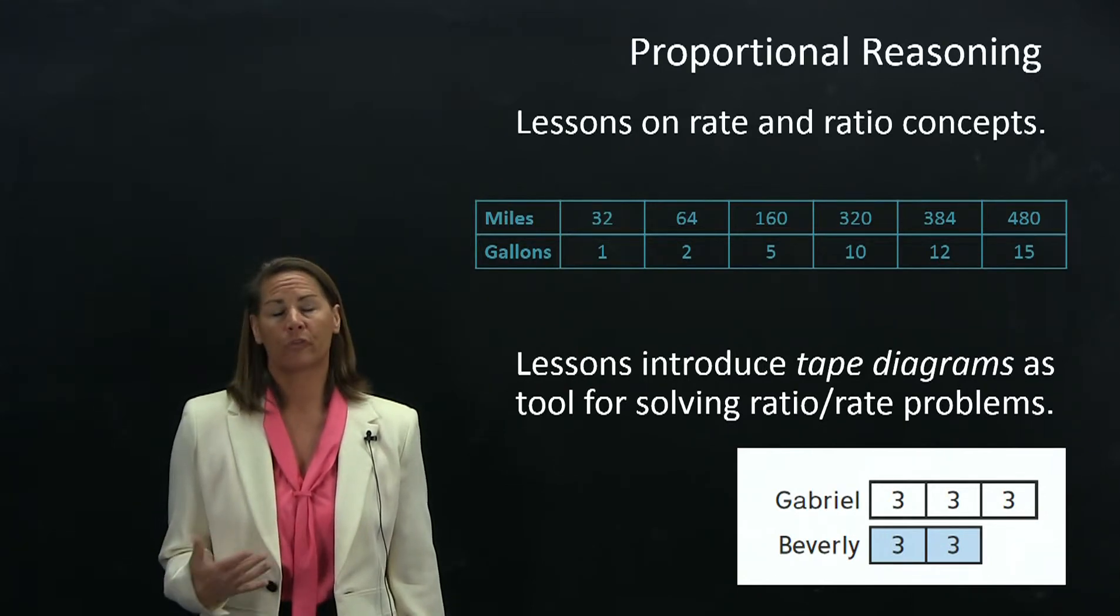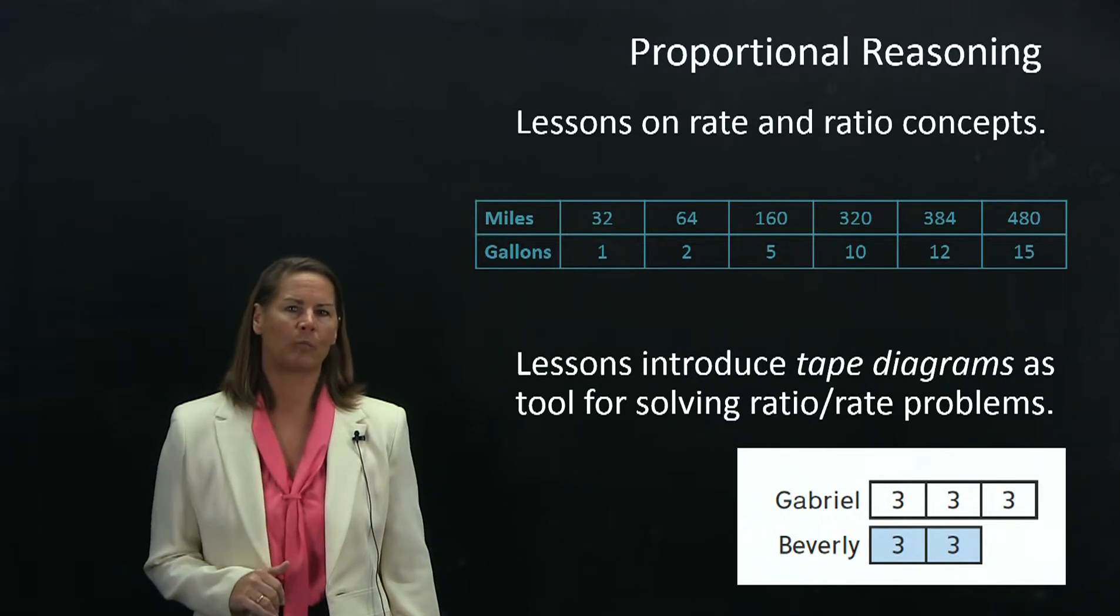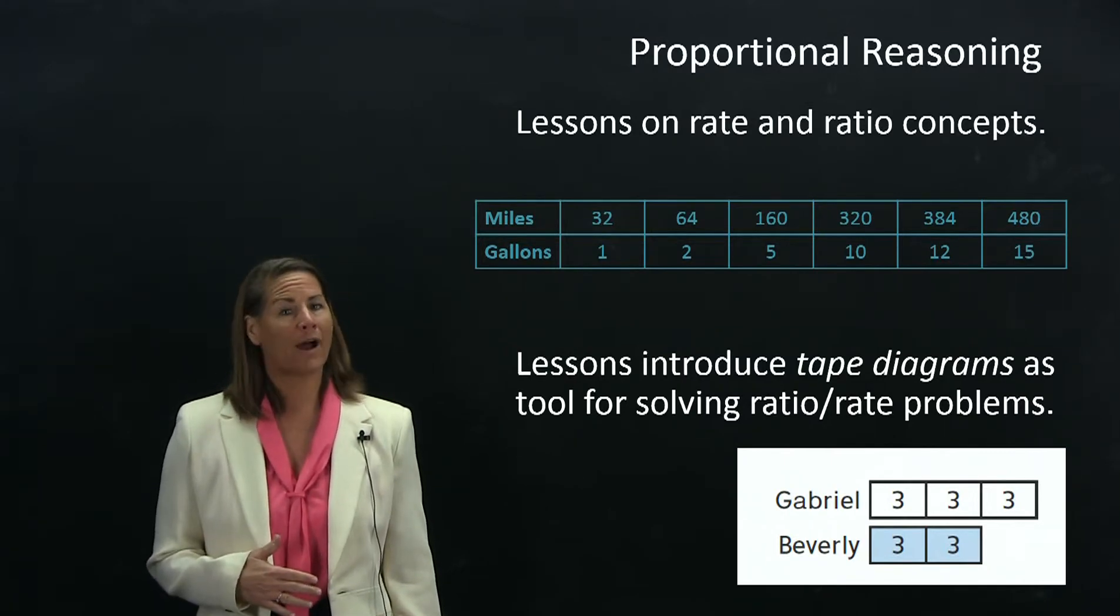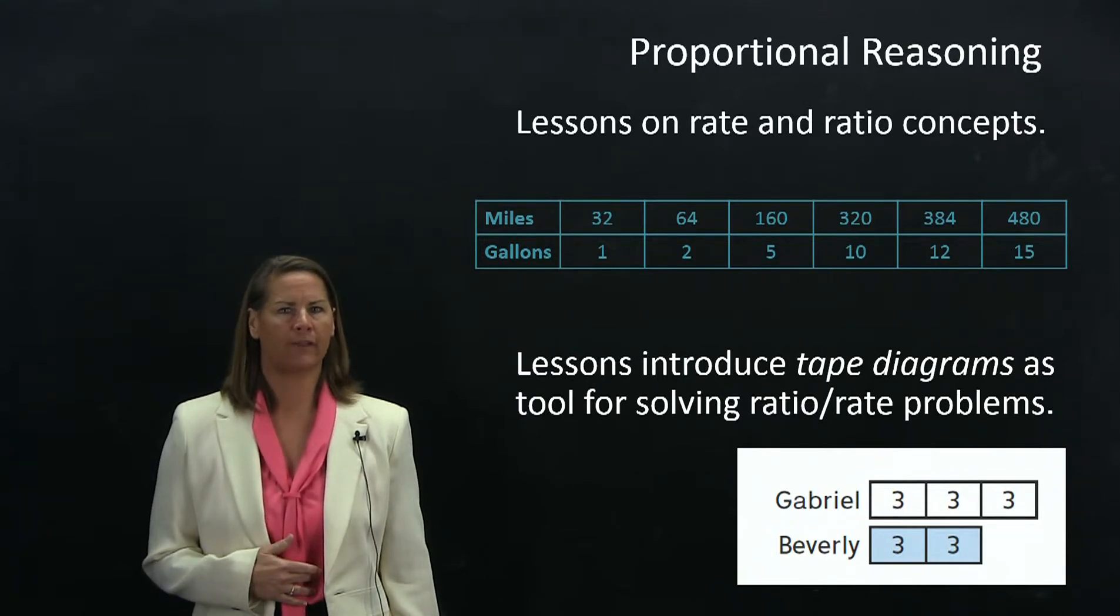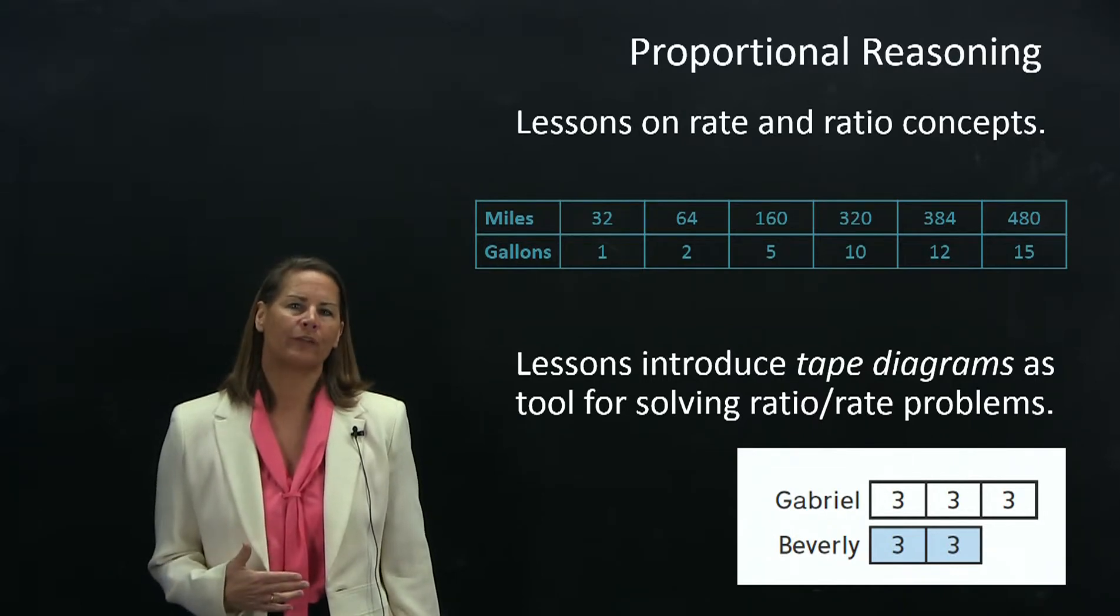What you're seeing represents a three to two relationship. Let's say Gabriel has three pencils for every two pencils that Beverly has. The way the tape diagram works, if you forget about the numbers for just a minute, you can see that three to two relationship in the way the boxes are structured: three boxes for Gabriel and two boxes for Beverly.